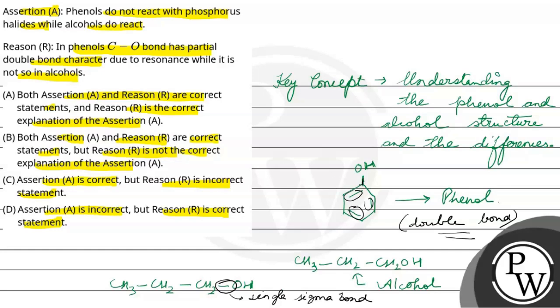So phenols do not react with phosphorus halides. Halide is basically a kind of nucleophile. Phenols do not react with phosphorus halides, but alcohols do because the alcohol's bond is very weakened compared to phenols.